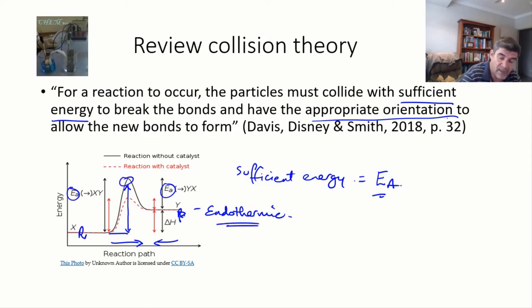Notice that as we go back in the direction of Y to X, in the reverse direction, the energy of activation is now much smaller. So for the endothermic reaction, we have a smaller EA.